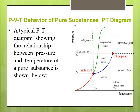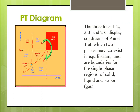Let us see what the triple point and critical point are, and how the system reaches these states. The diagram shows line 1 to 2 as the sublimation line, 2 to 3 as the fusion line — which is the dotted line — and 2 to C as the vaporization line. After that you can see the red color box, which indicates the fluid region. These three lines — 1 to 2, 2 to 3, and 2 to C — display conditions of pressure and temperature at which two phases may coexist in equilibrium, and they form the boundary for the single-phase regions of solid, liquid, and vapor.